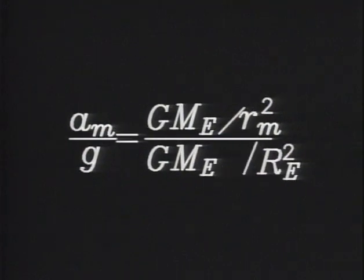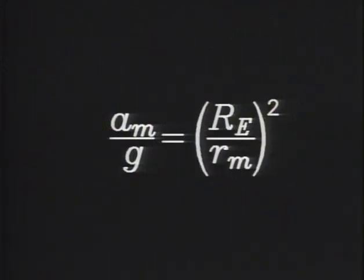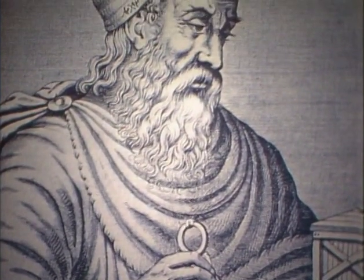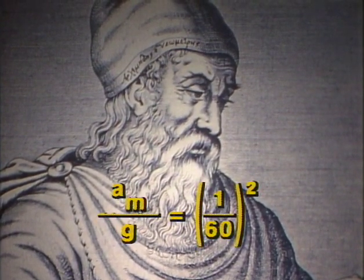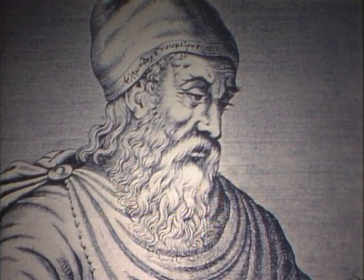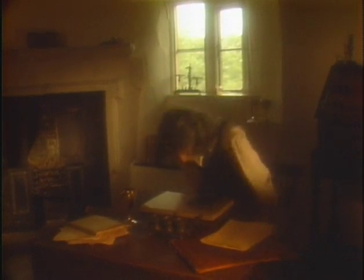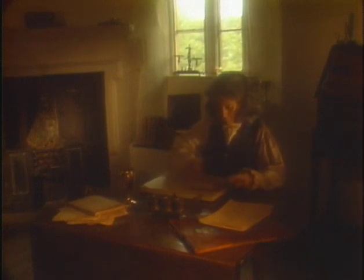The rate at which the moon falls is smaller than the rate at which the apple falls. It's equal to the radius of the Earth divided by the distance to the moon, squared. That ratio has been known since antiquity — Greek mathematicians calculated the distance to the moon as 60 times the radius of the Earth. The moon should fall more slowly than the apple by a factor of 60 squared, or 3,600 times slower. Since an apple falls 16 feet in one second, Newton concluded that each second the moon should fall a distance of 16 feet divided by 3,600 — that distance is 1/20th of an inch. That was the prediction made by Isaac Newton's theory of gravity.